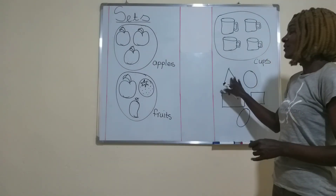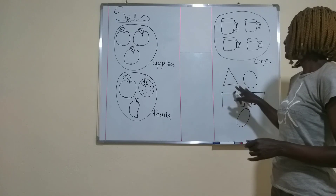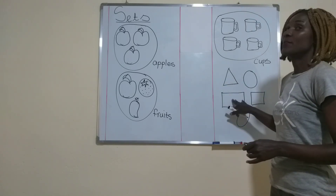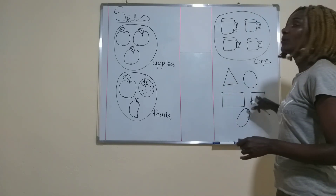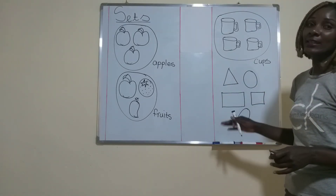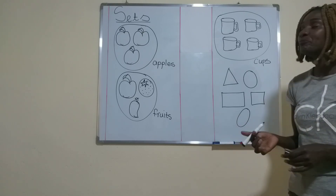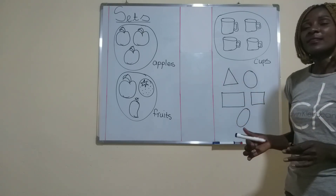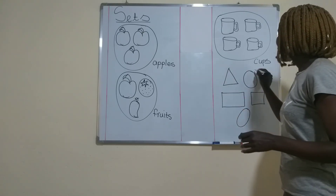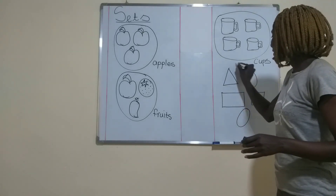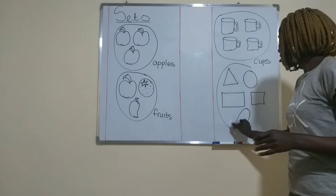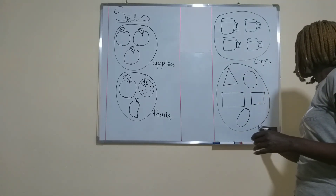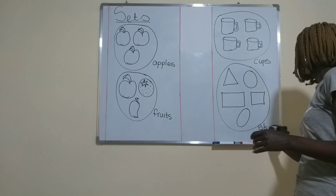We have a triangle, we have a circle, we have a rectangle, we have a square and an oval. All these make a set of shapes.